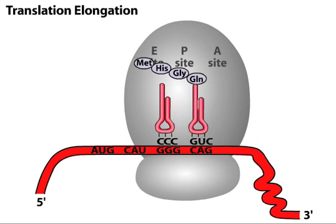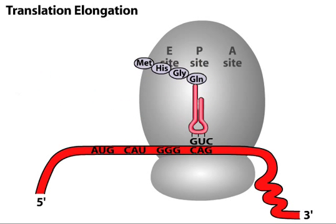The cycle is repeated as the ribosome travels along the mRNA, resulting in a growing polypeptide chain.